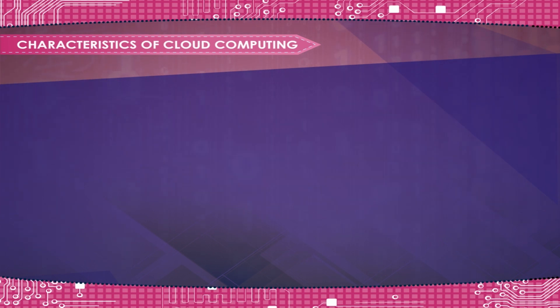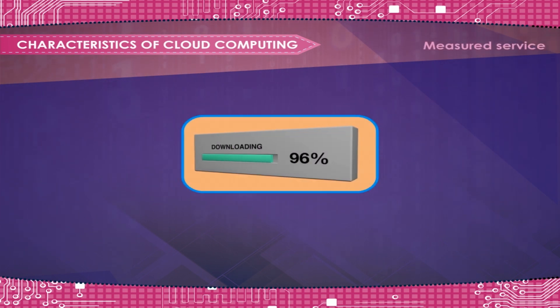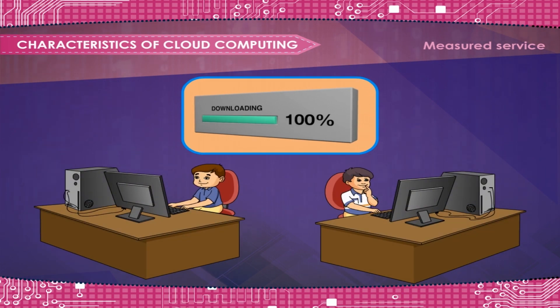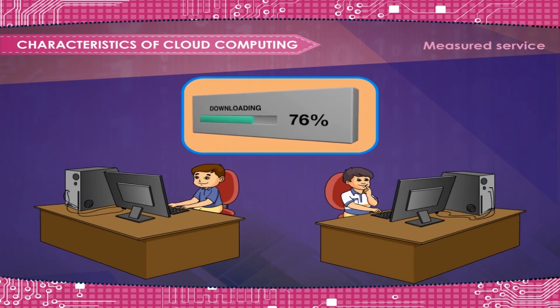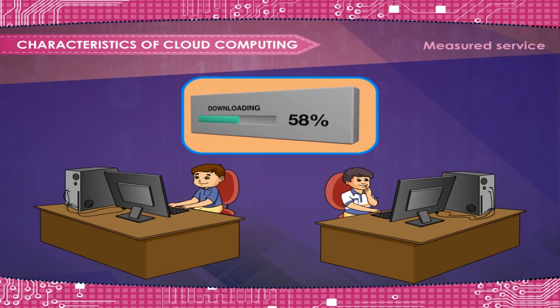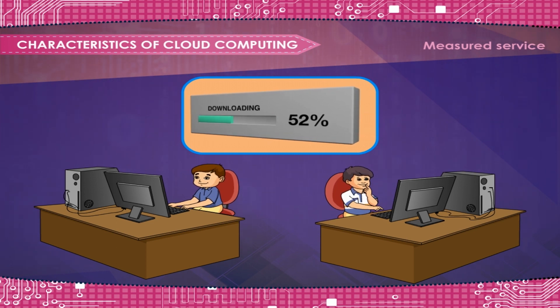Measured Service: resource usage is monitored, measured and reported, and billed transparently based on utilization. In short, pay for use.